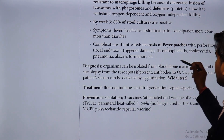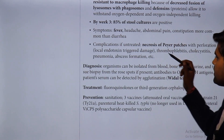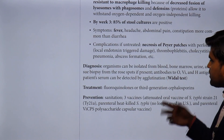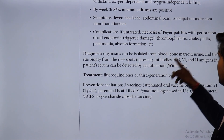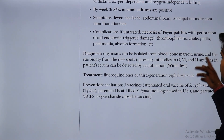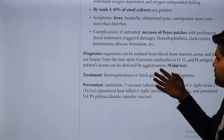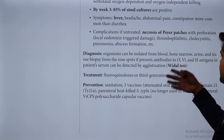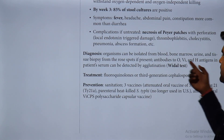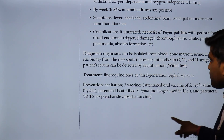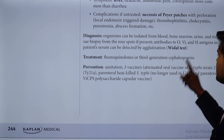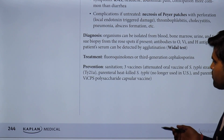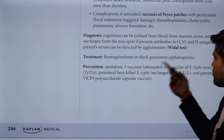Salmonella typhi survives intracellularly and replicates in macrophages by resisting macrophage killing through inhibition of lysosome-phagosome fusion (inhibiting phagolysosome formation). It also withstands oxygen-dependent and oxygen-independent killing mechanisms using defensins. Untreated complications include necrosis of Peyer's patches with perforation, thrombophlebitis, cholecystitis, pneumonia, and abscess formation. Diagnosis: isolate organisms from blood, bone marrow, urine, and tissue biopsy from rose spots. Widal test detects antibodies by agglutination.